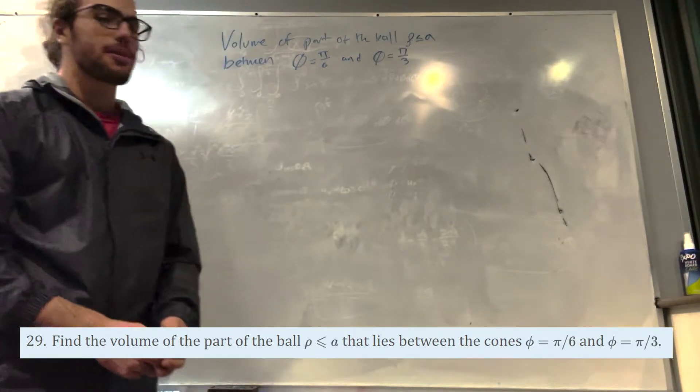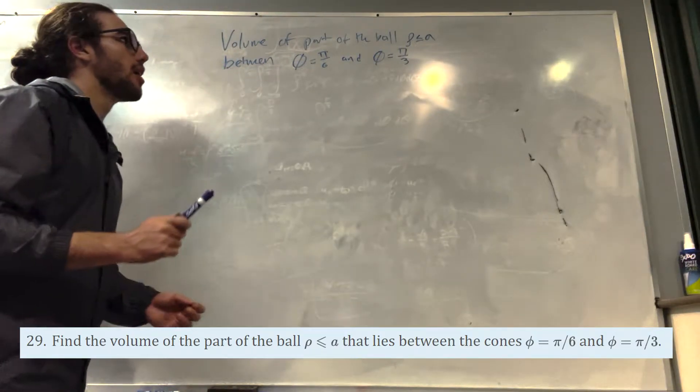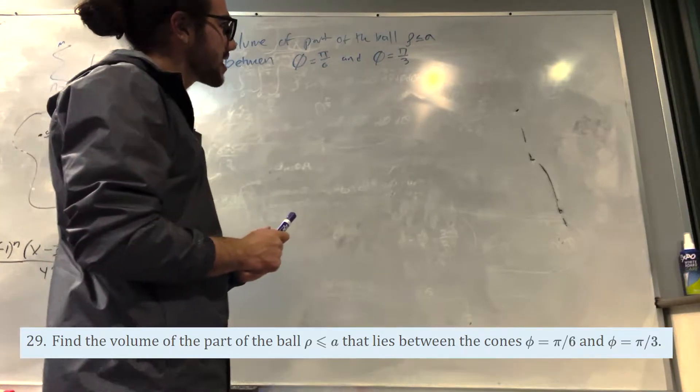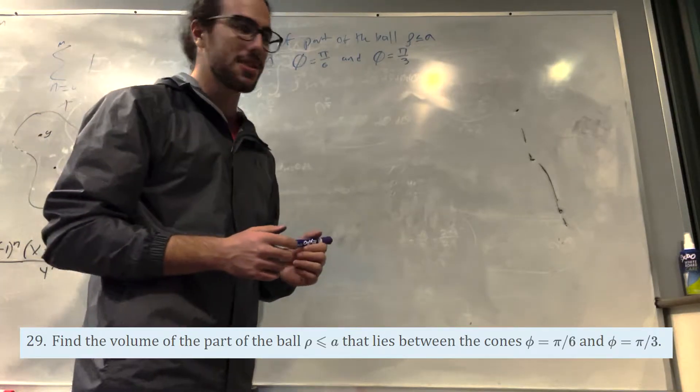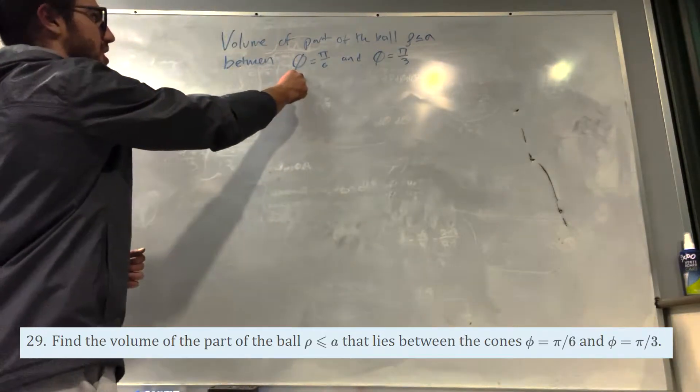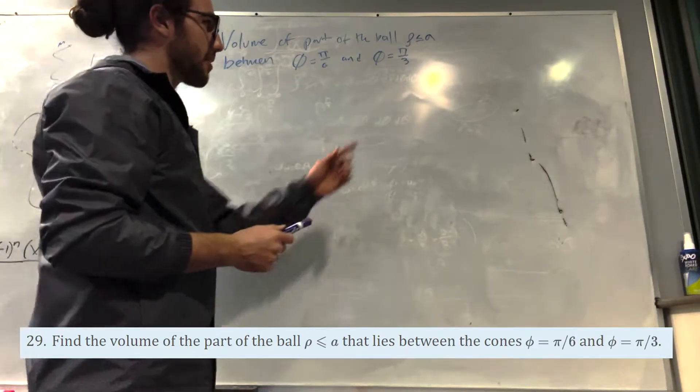What's up, Calc gang? Today we're gonna be finding the volume of part of a ball that lies between phi equals pi over 6 and phi equals pi over 3.